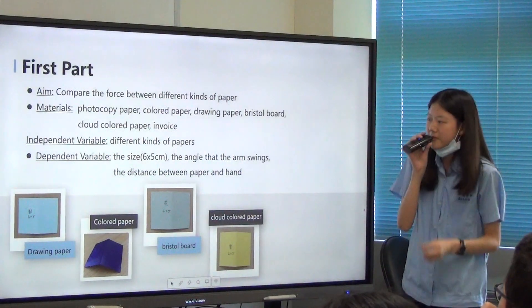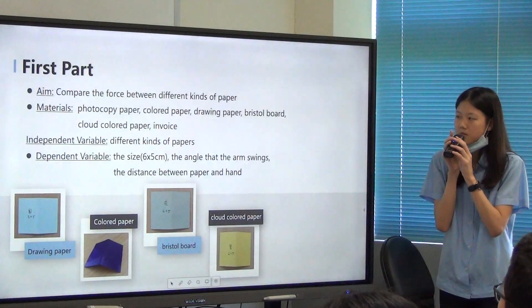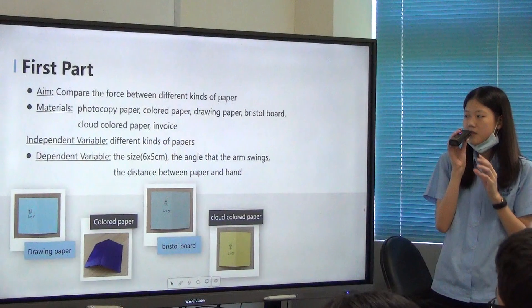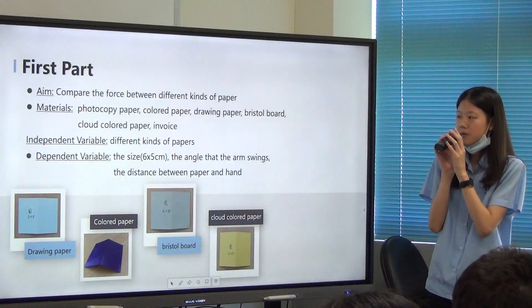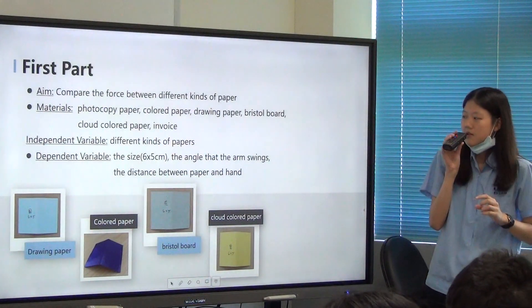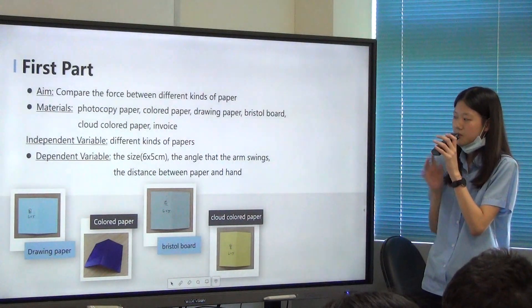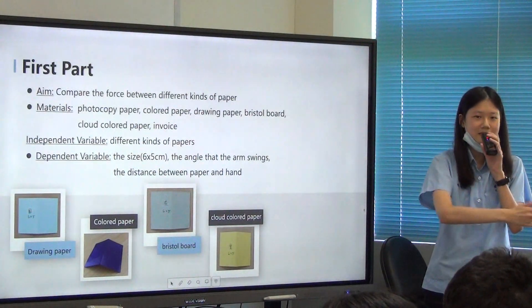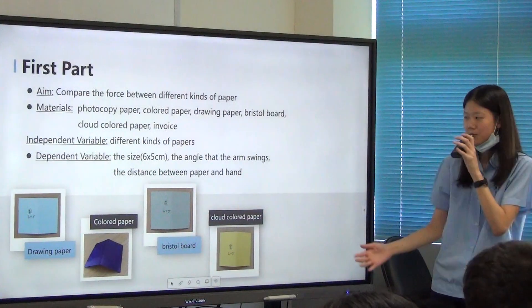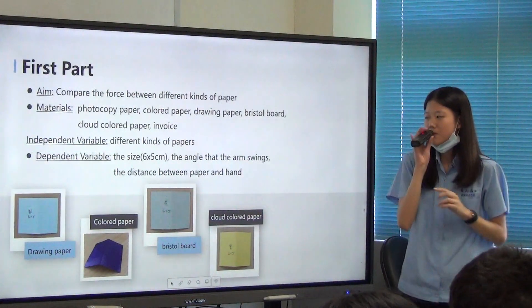And the independent variable of the experience is different kinds of paper. And the dependent variables are the size, the angle of the arm swing, and the distance between paper and hand.